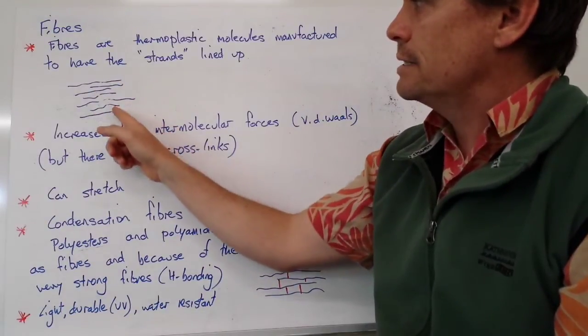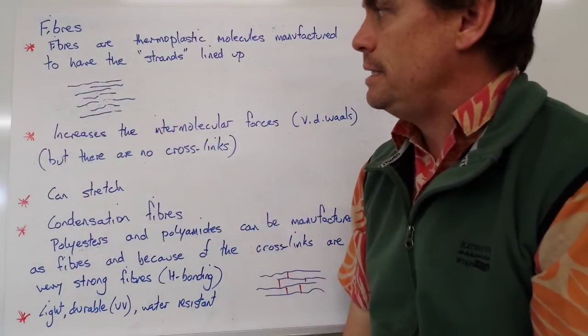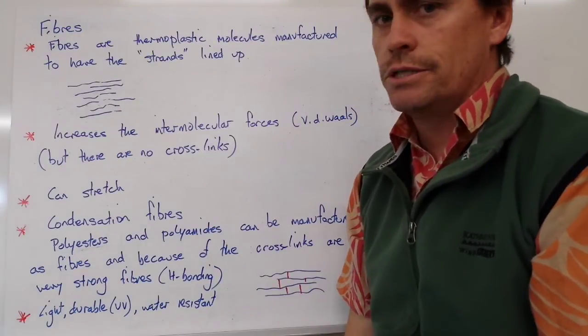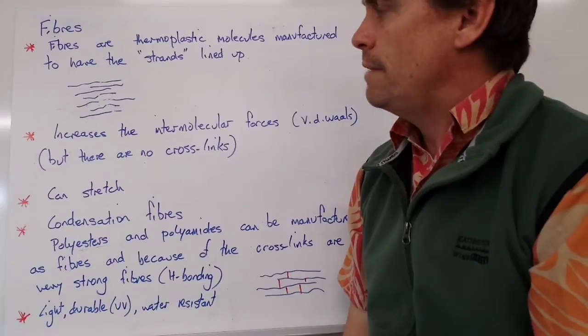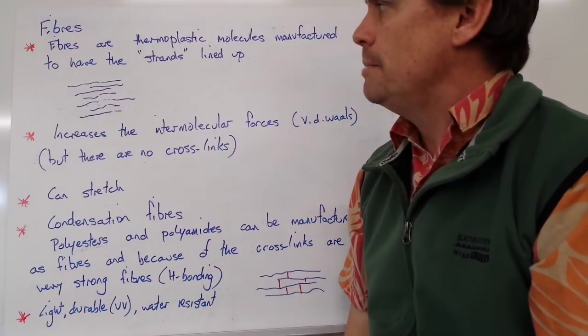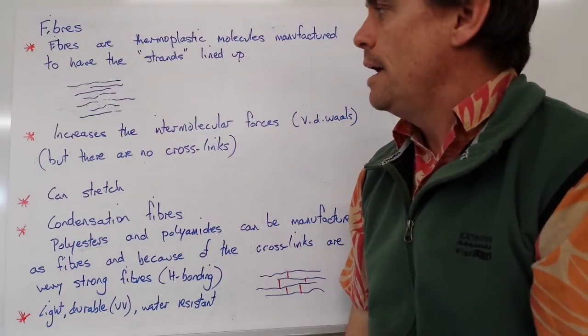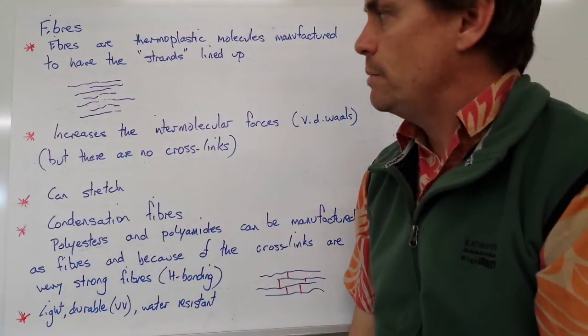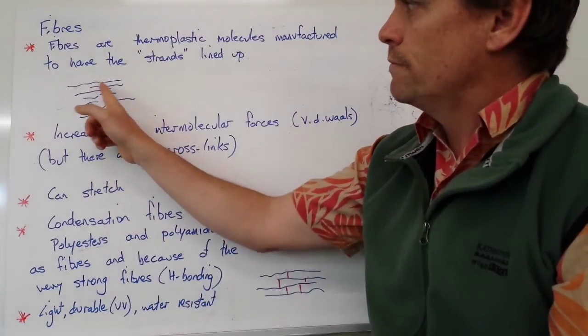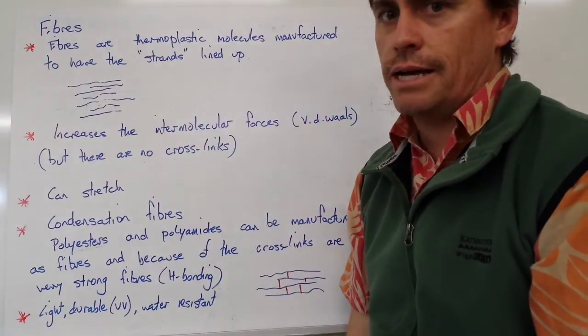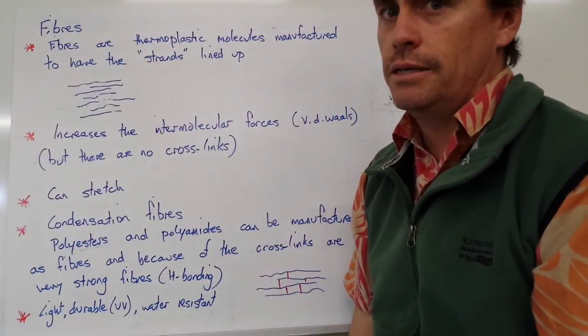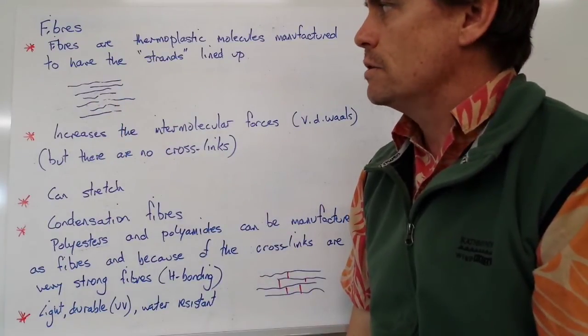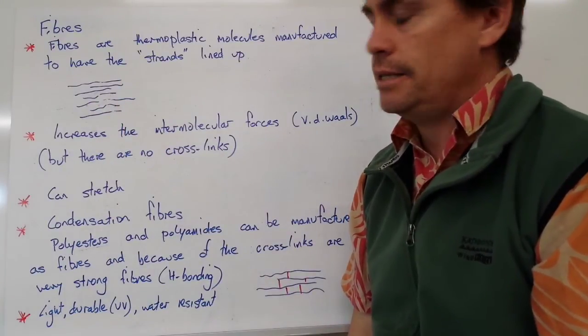Because we get those strands lining up in the same axes, we can have more intermolecular forces based on van der Waals forces. So the melting point will increase. However, we don't have any cross-links. We don't have any groups off to the side of these polymers that will interact to give us hydrogen bonding. So the molecular forces are still quite weak, but they are not as weak as our thermoplastics.